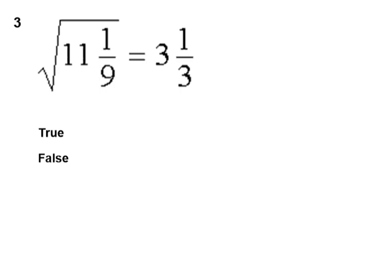Question three, the square root of 11 and 1 ninth is equal to 3 and 1 third. If you need a hint, make sure that you don't try to find the square root of 11 and 1 ninth as a mixed fraction, but rather as an improper fraction.